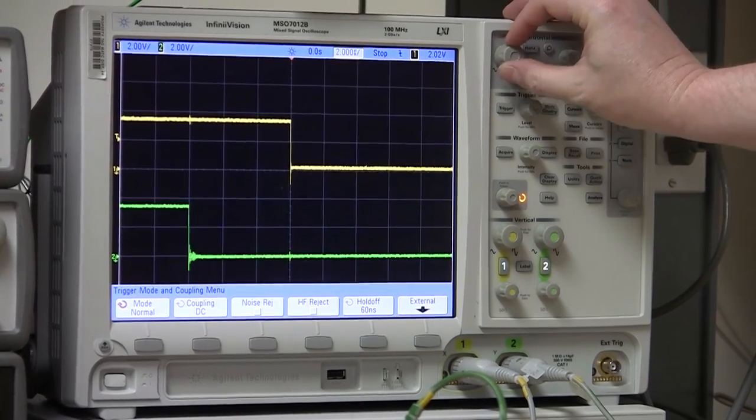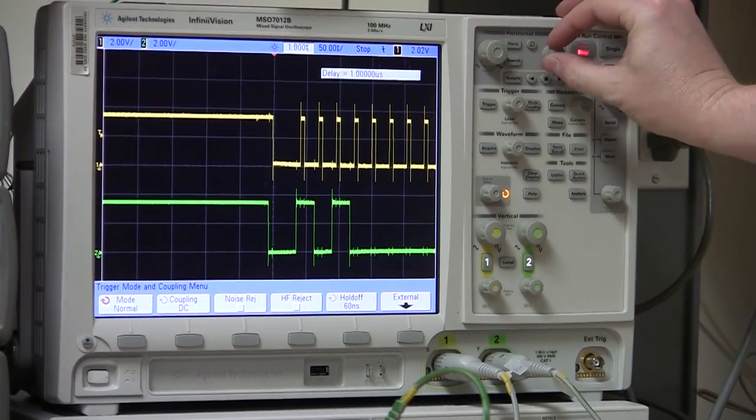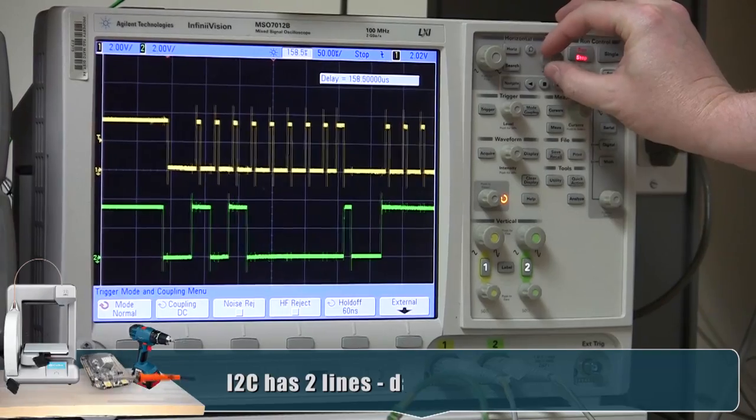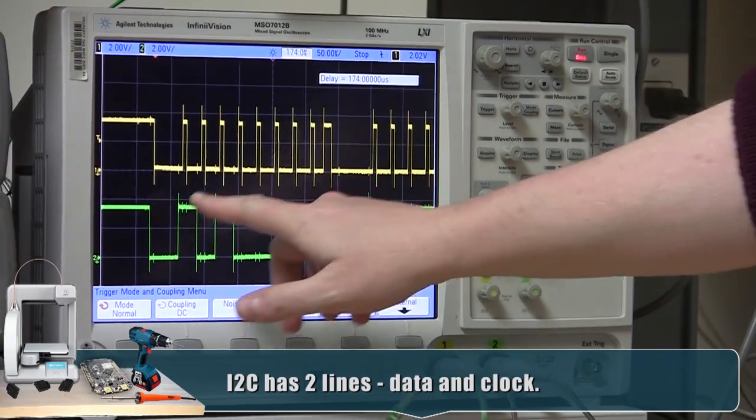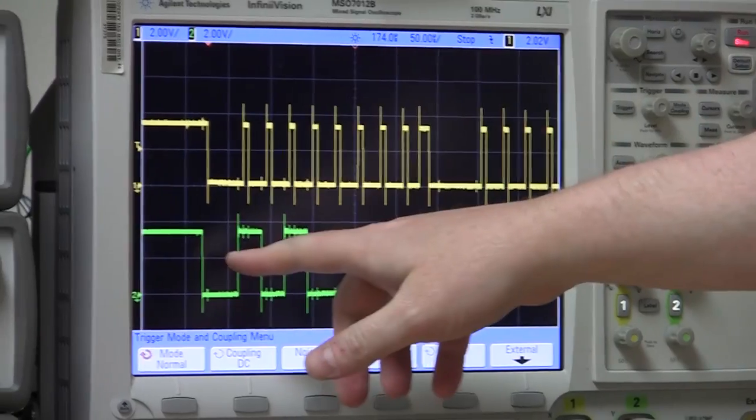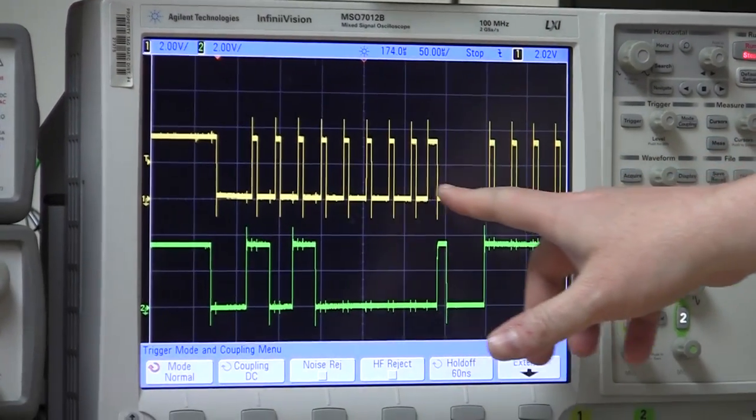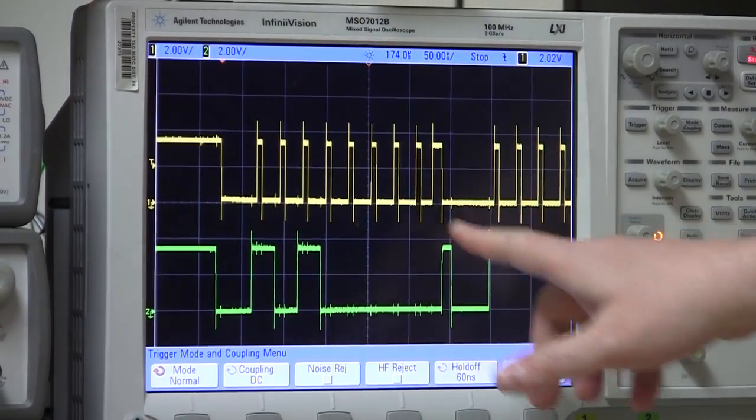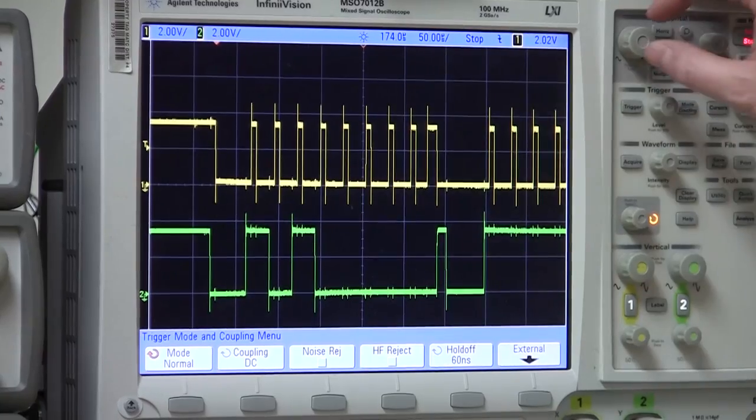Now it goes right to stop mode, and we can actually scroll through and look at what we got. So you've got two lines here. I squared C has a stop and start condition, so they're both pulled low, and the higher one here, channel one, that's going to be your clock, and the green is going to be your data.